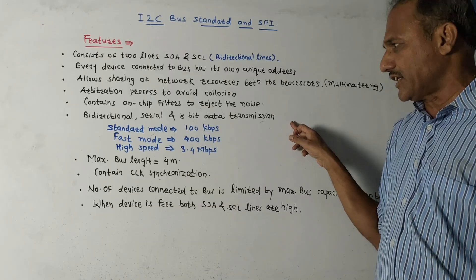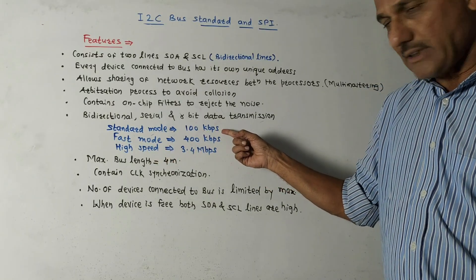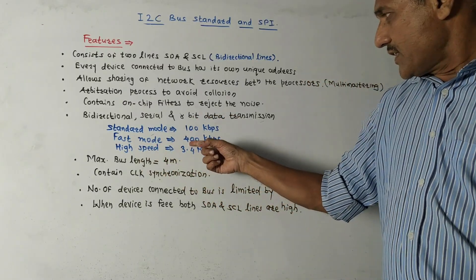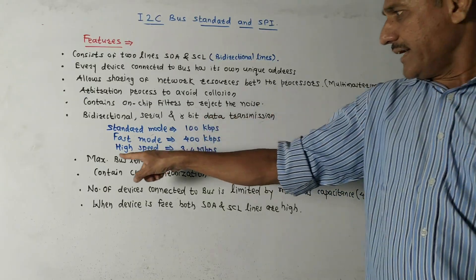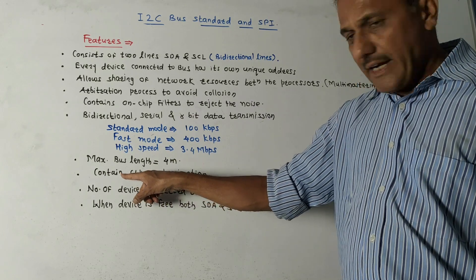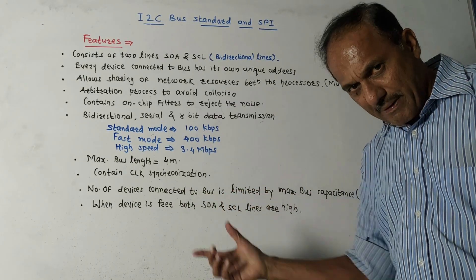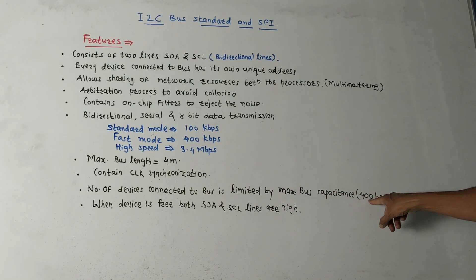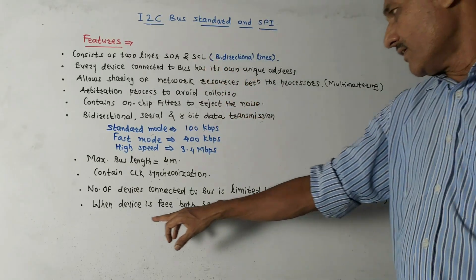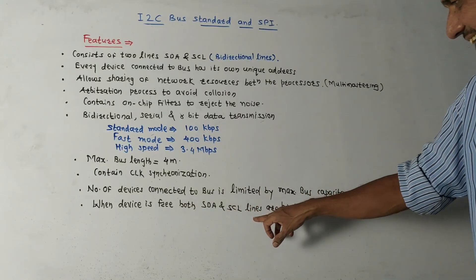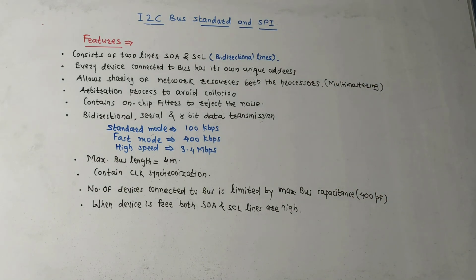Data transmission is bi-directional, serial, and 8-bit. There are three modes of operation: standard mode limited to 100 kbps, fast mode at 400 kbps, and high-speed mode at approximately 3.4 Mbps. Maximum bus length is four meters. The number of devices connected is limited by maximum bus capacitance, which is 400 picofarads. When any device is free, both SDA and SCL lines for that device will be high.